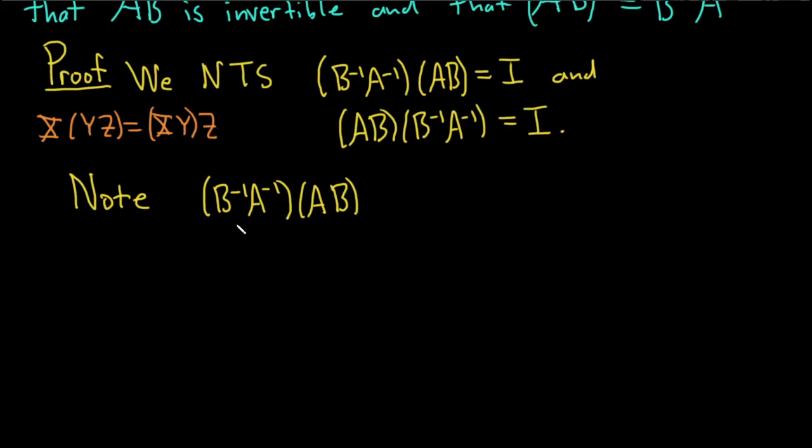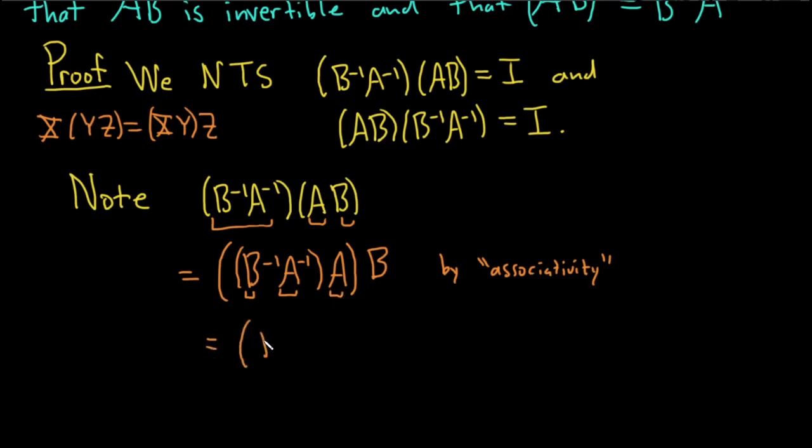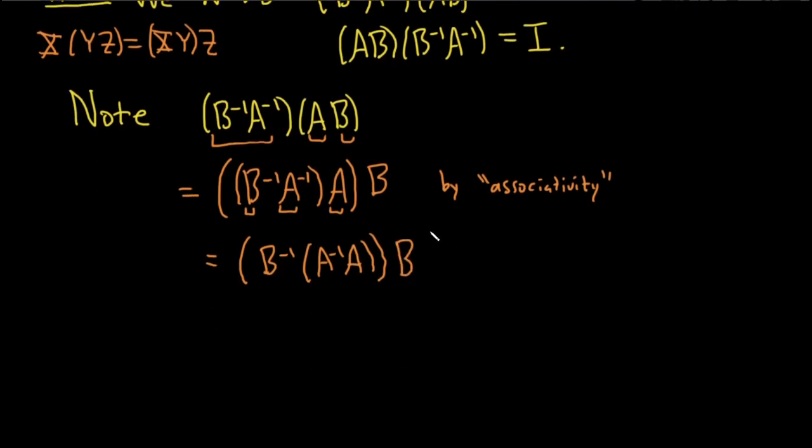So here we're going to use associativity on these three matrices here. So we can write this as B inverse times A inverse times A. And then we'll multiply it by B. So using associativity, this is by associativity of matrix multiplication. So now we can use it again on the three pieces here. So this will be B inverse, times A inverse A, and then B. So that was using associativity again.